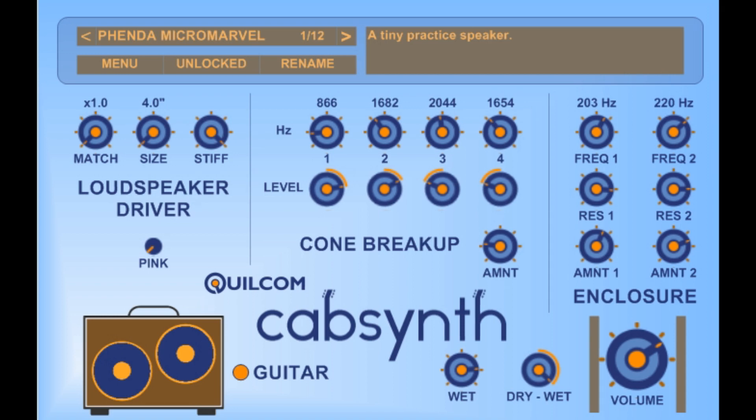The usual way to recreate the sound of a guitar, loudspeaker and cabinet system is to create an impulse response, either with a sudden clap of white noise or a sine wave sweep, and then this is fed into a convolution effect, which recreates the sound as it was captured with the impulse response.